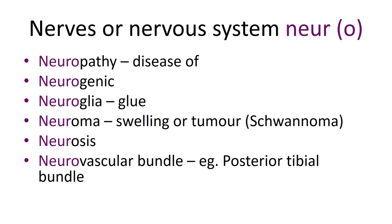'Neurogenic' — genic means to begin — so something that is neurogenic begins in the nervous system. For example, a patient might be admitted to accident and emergency with a neurogenic shock because they've damaged their spinal cord. They are in shock, and that problem has begun with damage to the nervous system — it is neurogenic; it began in the nervous system.